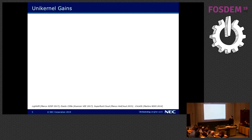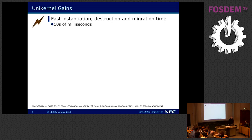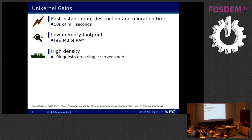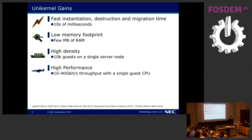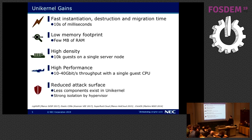The gains we found from our previous research, mainly from a network function virtualization space, include: fast instantiation, destruction, and migration times on the order of tens of milliseconds; a really low memory footprint of a few megabytes of RAM; extremely high density — we were able to run 10,000 guests on a single x86 hardware server before running out of RAM; high performance using a single guest CPU, achieving 10 or 40 gigabit network throughput; and reduced attack surface because you have much fewer components in a unikernel, with strong isolation provided by the hypervisor environment.